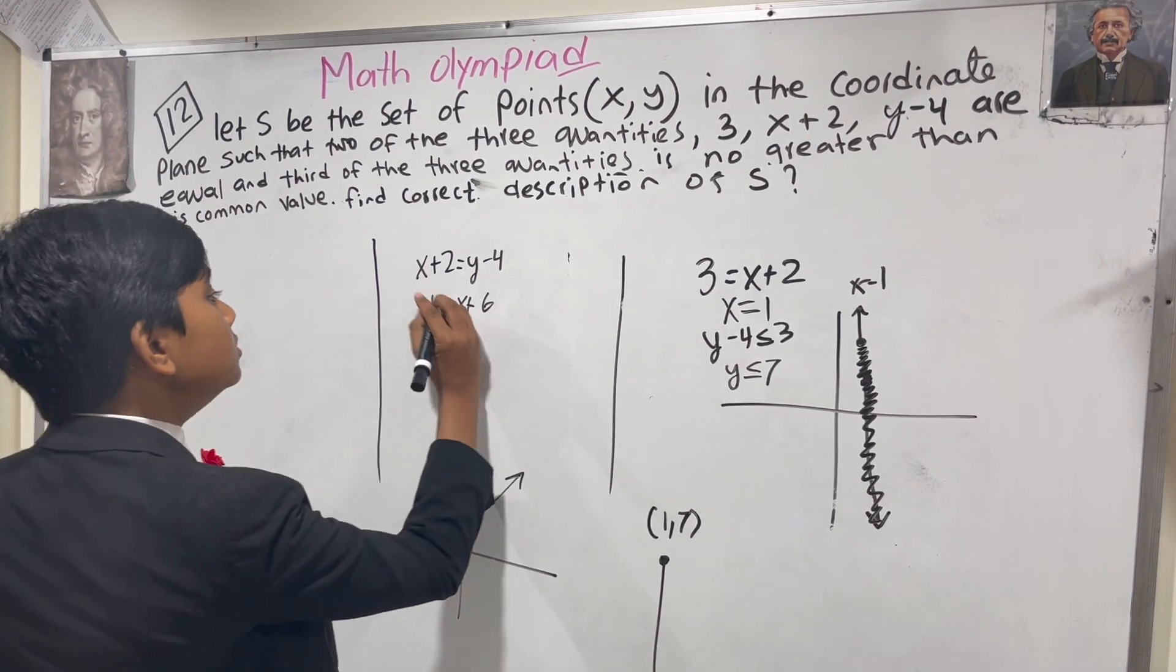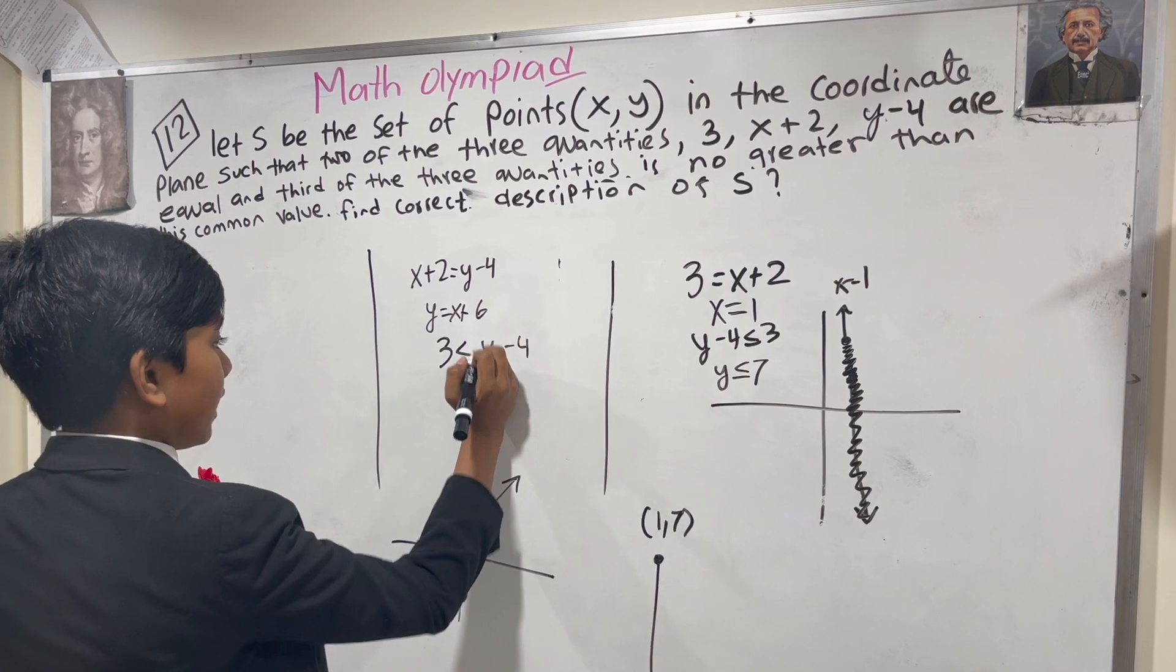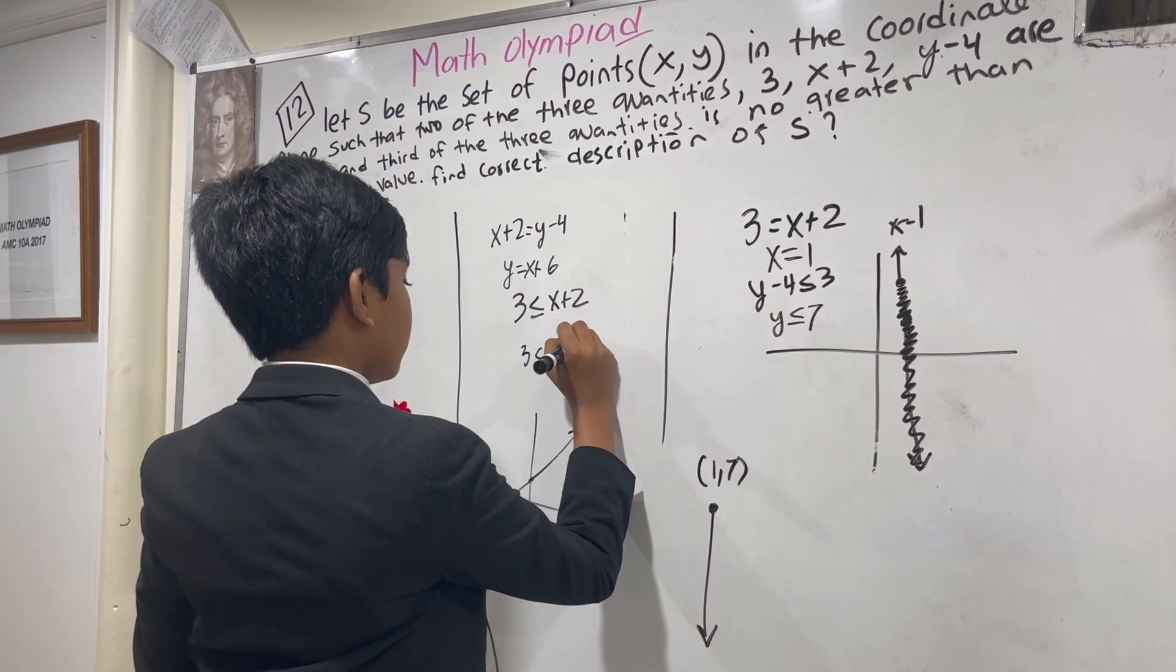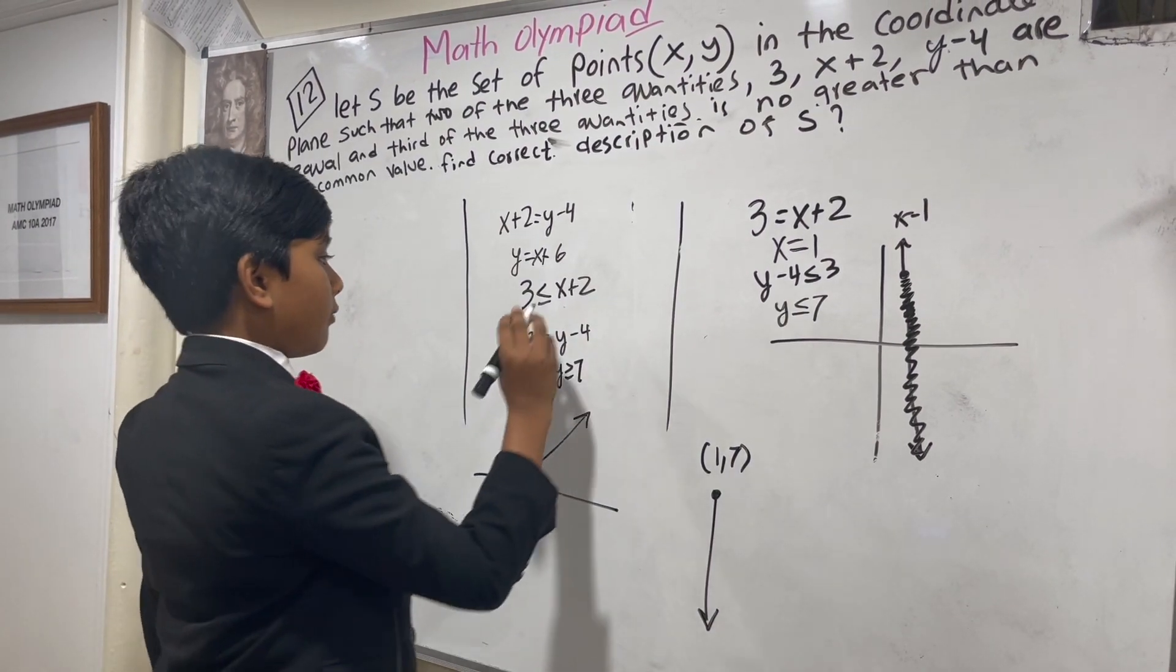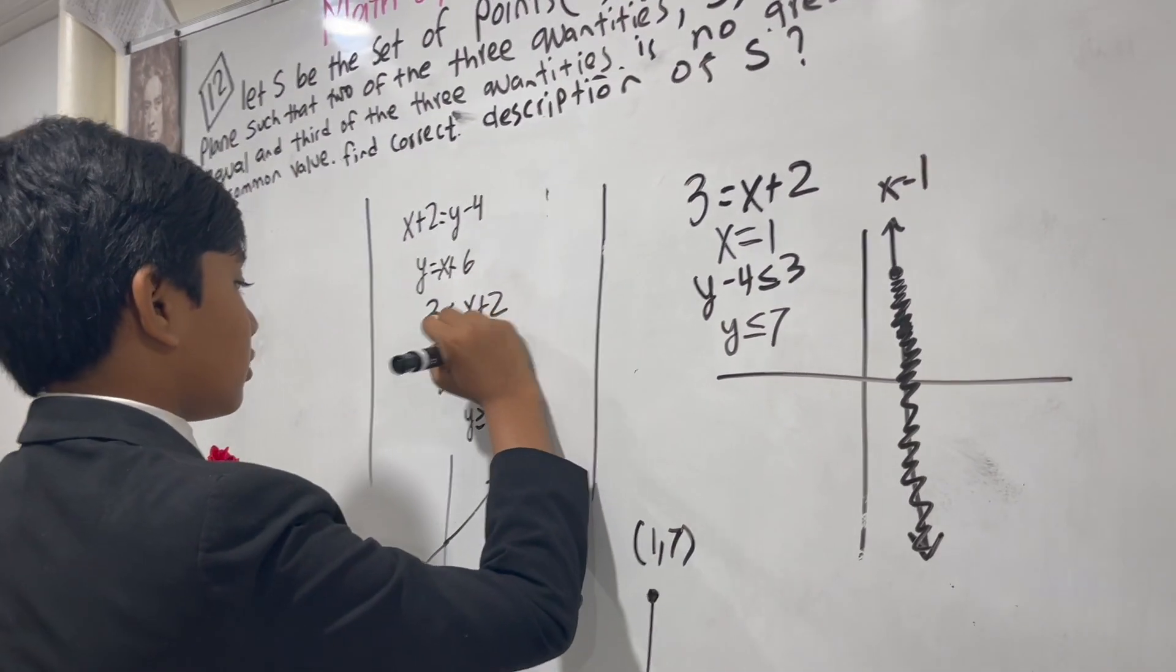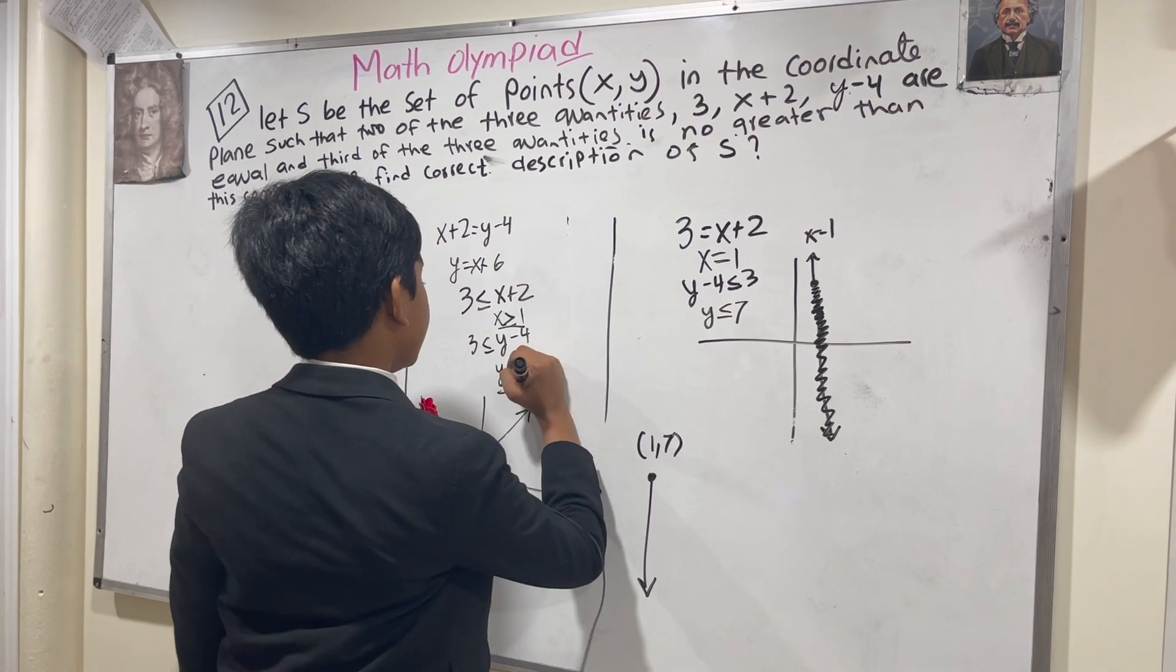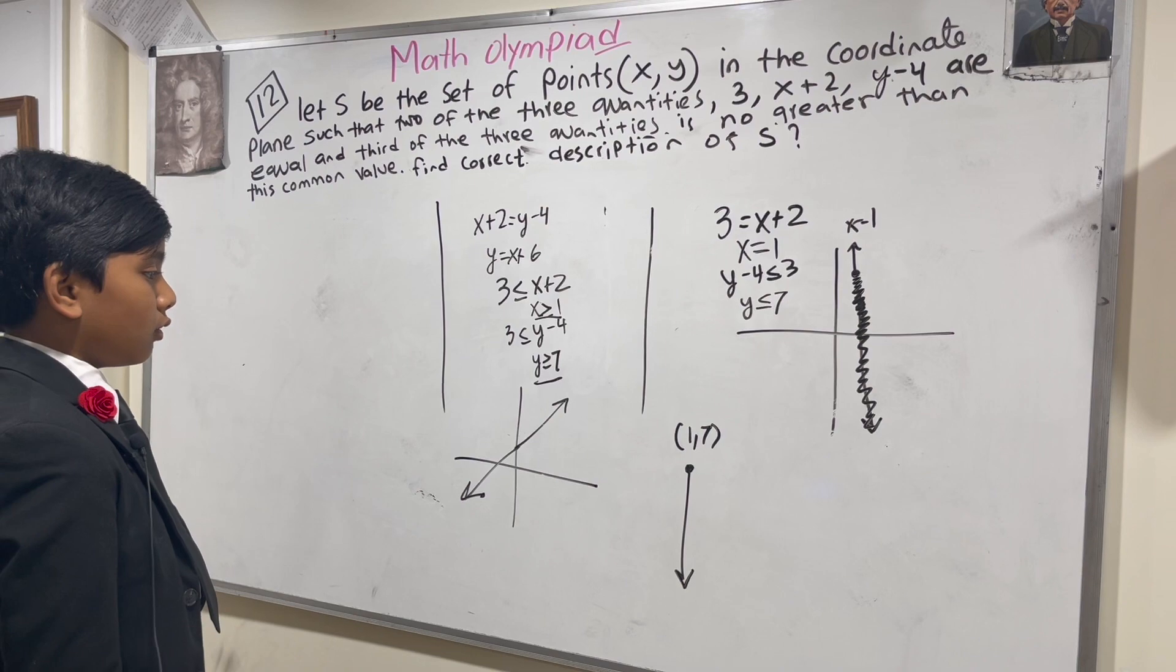Alright, and that means that 3 is less than or equal to - we'll choose y minus 4 here. Meaning that 3 is also less than or equal to x plus 2. So doing this for both of them, it doesn't yield much for y. It means y is greater than or equal to 7. But for x plus 2, that means that x is greater than or equal to 1. So the portion of this graph where these two are true, x is greater than or equal to 1 and y is greater than or equal to 7,